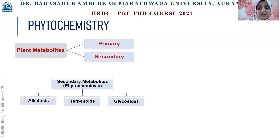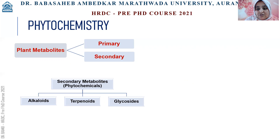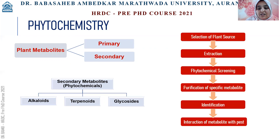Secondary metabolites are grouped as alkaloids, which are nitrogen-containing heterocyclic rings; terpenoids, which are derived from terpenes and have oxygen in the functional group; and glycosides, which are chemicals made up of a carbohydrate and a non-carbohydrate group.